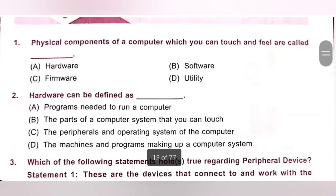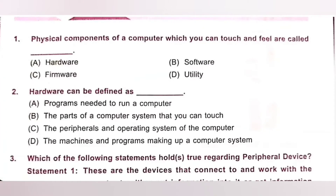Question 1: Physical components of your computer which you can touch and feel are called dash. Options: A. Hardware, B. Software, C. Firmware, D. Utility. Computer hardware is the collection of all parts of the computer that you can physically touch. So option A, Hardware, is the correct answer.